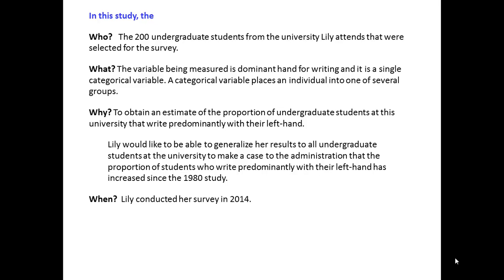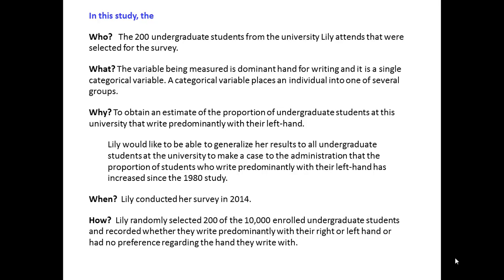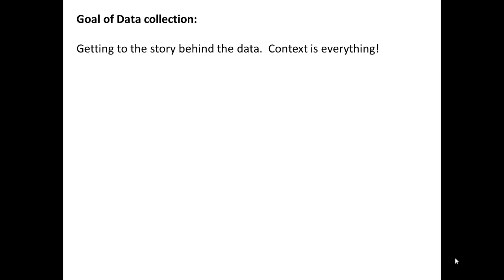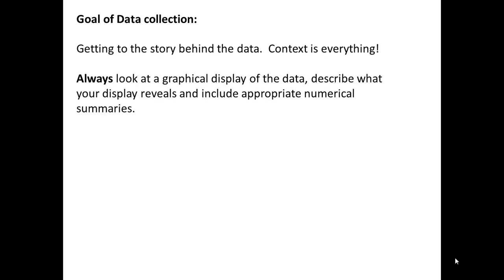When: Lily conducted her survey in 2014. How: Lily randomly selected 200 of the 10,000 enrolled undergraduate students and recorded whether they write predominantly with their right or left hand, or had no preference. The goal of data collection is getting to the story behind the data. Context is everything. Always look at a graphical display of the data, describe what your display reveals, and include appropriate numerical summaries.